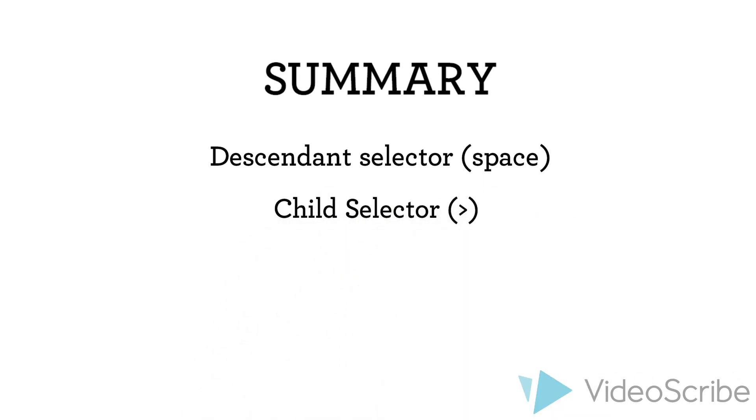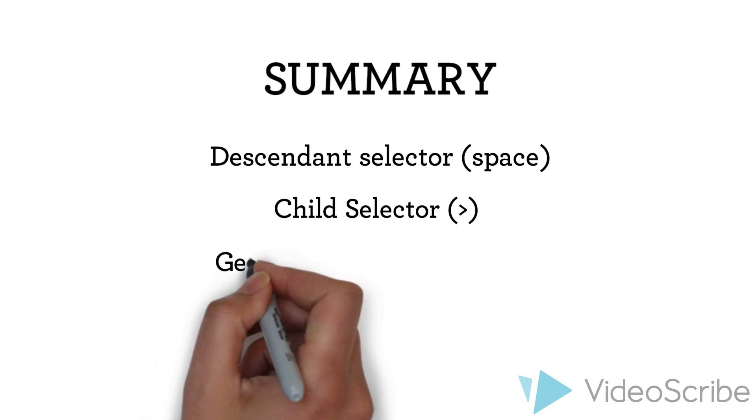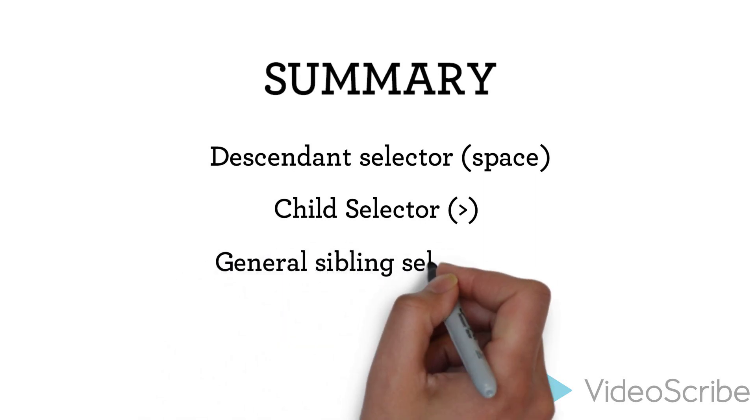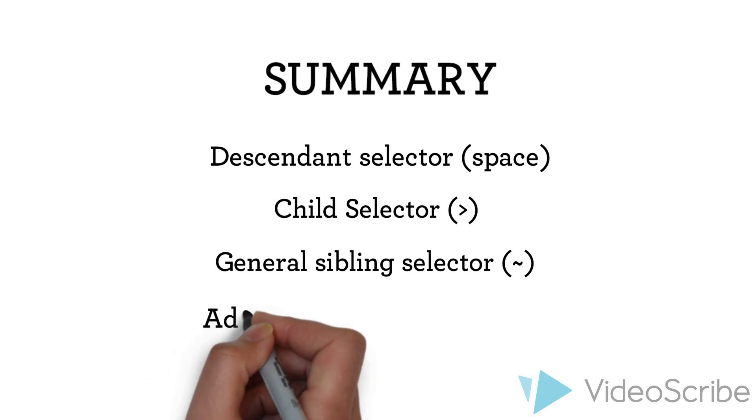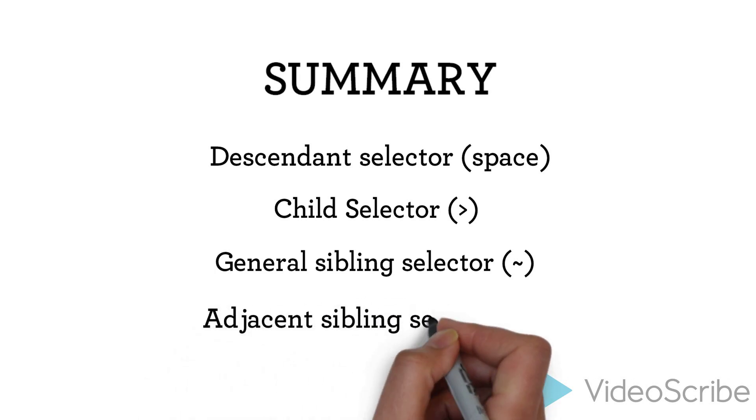If you want to select nodes on the same level, you can either use the general sibling selector for all sibling nodes or the adjacent sibling selector, if you only need immediately following siblings.